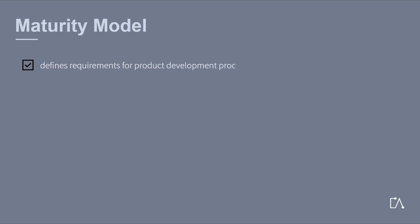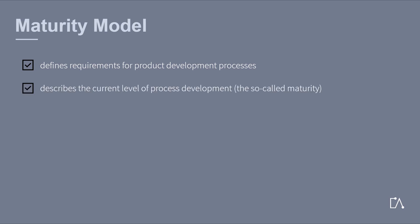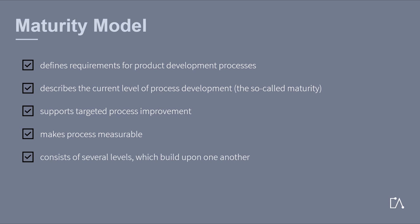Maturity models define requirements for product development processes. They describe the current level of development of the process, the so-called maturity, and as such can support targeted process improvement. This means that processes become measurable. Every maturity model consists of several levels which build upon one another and have to be fulfilled in order for a capability level to be considered fulfilled.